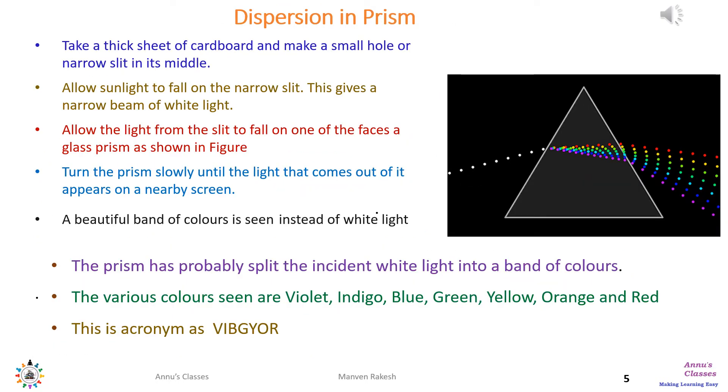Now we have understood the refraction process in a prism. Let us do one activity: take a thick cardboard sheet, make a hole, and through this narrow slit allow the sunlight to pass. Allow this to fall on the flat surface of the prism.